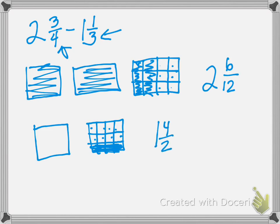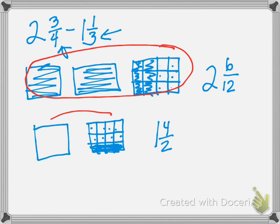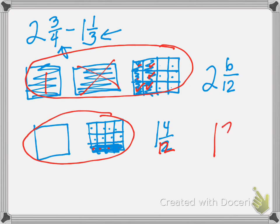So we want to come to our first set and subtract our second number. First let's subtract the 1 whole — we get rid of one of those. Then we need to get rid of 4 twelfths, so we check off 1, 2, 3, 4. And then what are we left with? We're left with 1 and 2 twelfths.